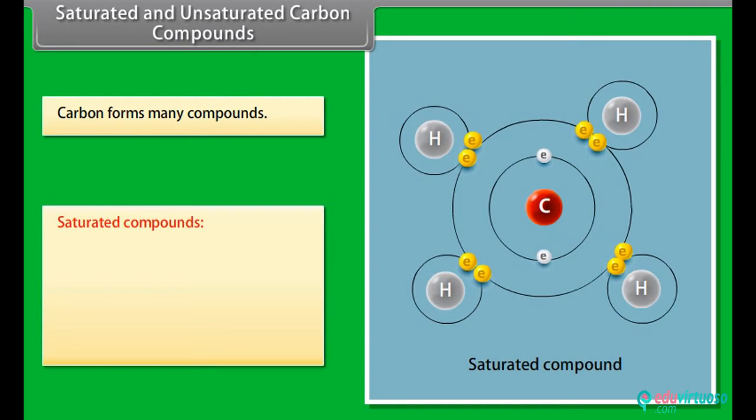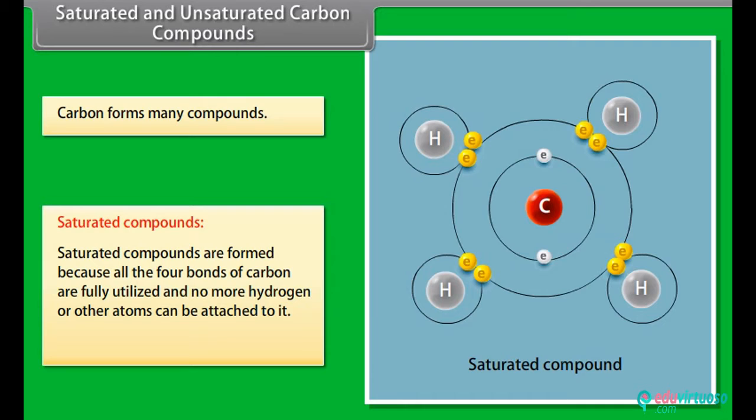Saturated compounds. The carbon and hydrogen compounds where the adjacent carbon atoms contain only one single covalent bond are known as saturated hydrocarbons. The reason for the formation of saturated hydrocarbons is because all four bonds of carbon are fully utilized and no more hydrogen or other atoms can be attached to it. These are known as alkanes.